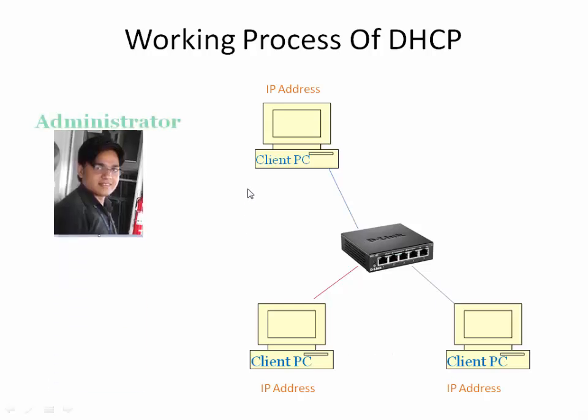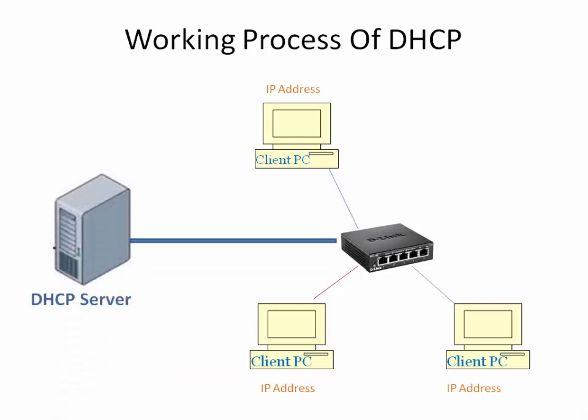Suppose there is a large network with more than 100 PCs — it will be a tough task for the administrator to manually provide an IP address to each and every computer, and the administrator would also need to know the IP address of each computer. Now DHCP server is used for large networks; it will assign IP addresses automatically to the network.